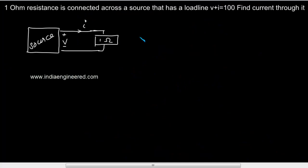In this question, a 1 ohm resistance is connected across a source that has a load line which is given as V plus I equal to 100.